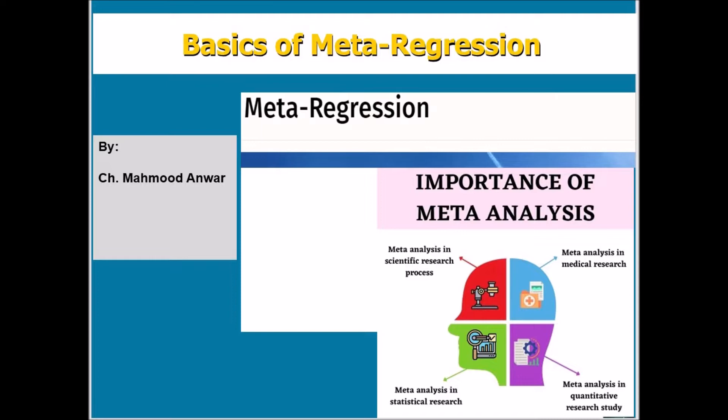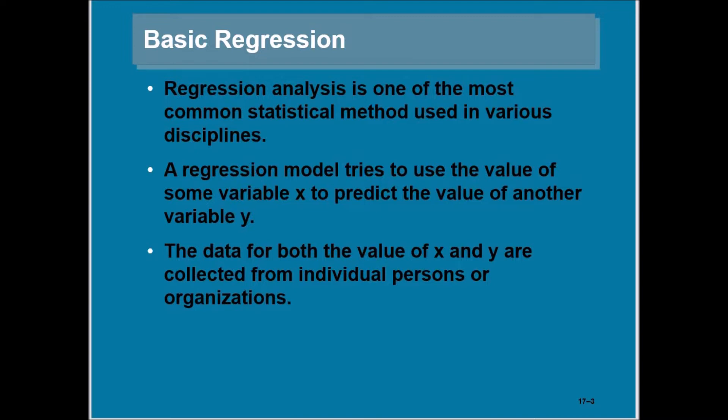What is meta-regression? To understand this, you have to recall the basic regression concept. Regression analysis is the most common statistical method used in various disciplines like social sciences, management, business statistics, and economics. A regression model tries to use the value of some variable called X to predict the value of another variable called Y. X values are fixed in repeated sampling—that is why the X variable is called non-stochastic variable, whereas Y variable is called stochastic variable.